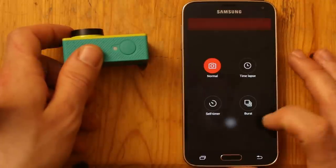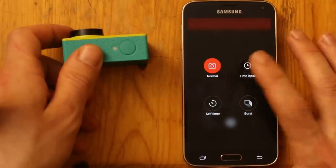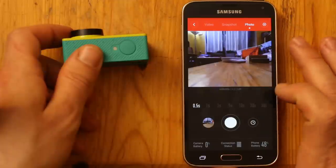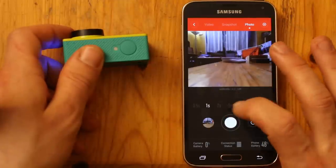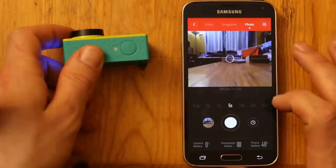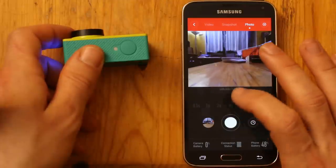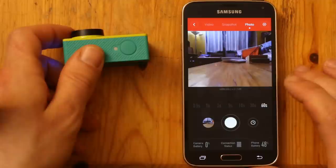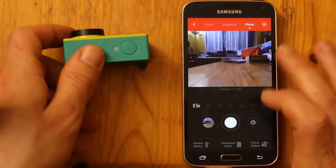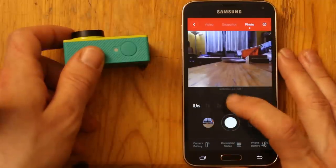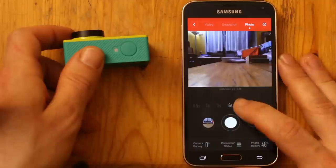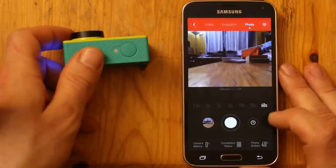If you go to photo, you've got your different modes here. Time-lapse. You can set the time from half a second. One second up to 60 seconds. So, one picture every half second. One second, two seconds, five seconds, ten seconds, thirty seconds, or sixty seconds.